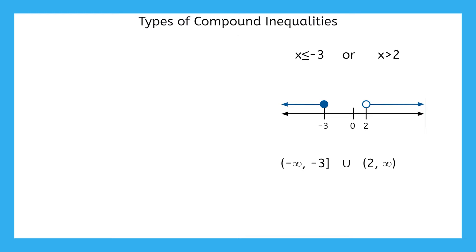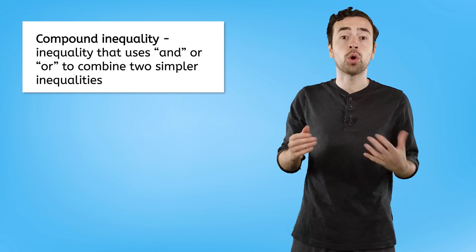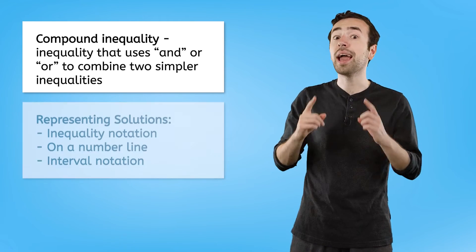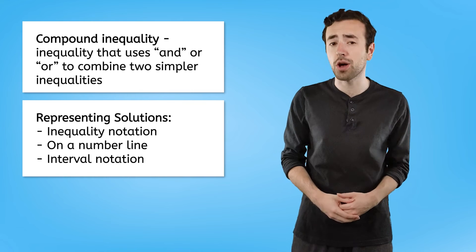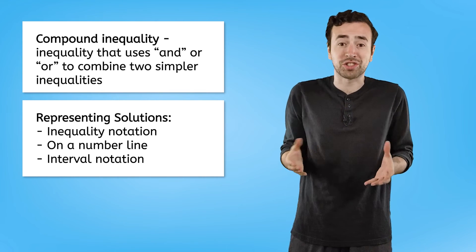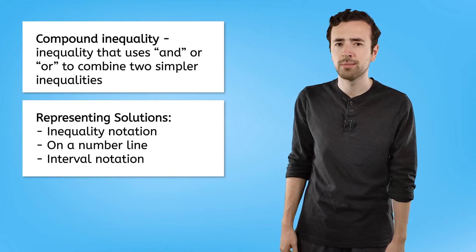The two types of compound inequalities you can encounter using AND and OR. And the different ways to express those compound inequalities, including inequality notation on a number line and interval notation. Now that we know that a compound inequality is an inequality that uses AND or OR to combine two simpler inequalities, and we know that we can write them in the same ways we're used to, let's try solving a few. You're going to see here that we're really just continuing to use all the same inequality solving skills that we already have. Let me show you what I mean.